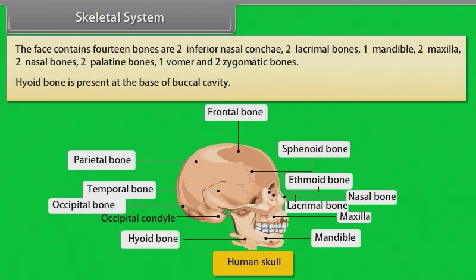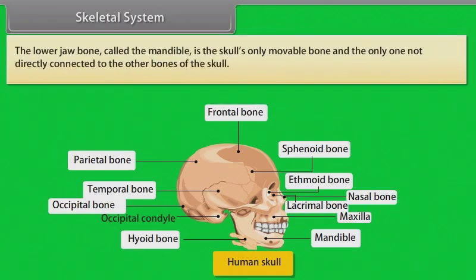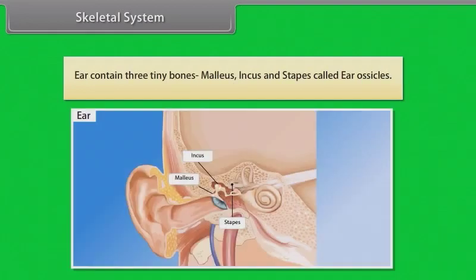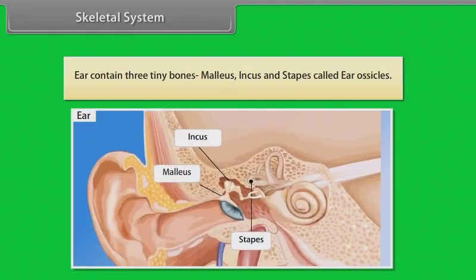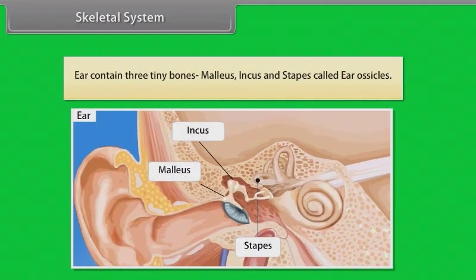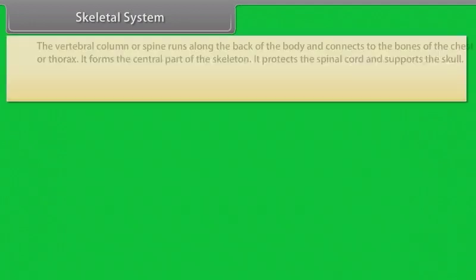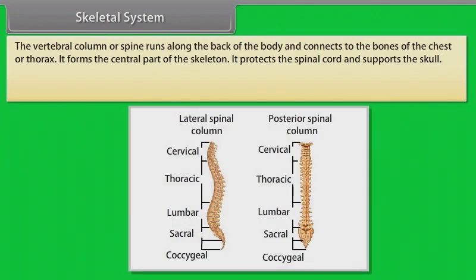The hyoid bone is present at the base of the buccal cavity. The lower jawbone, called the mandible, is the skull's only movable bone and the only one not directly connected to the other bones of the skull. The ear contains three tiny bones — malleus, incus, and stapes — called ear ossicles.